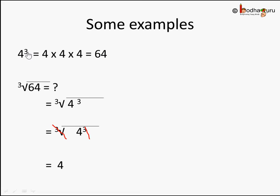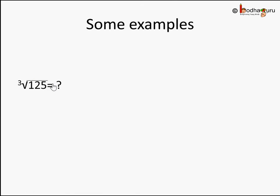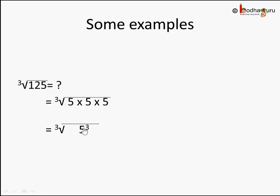Cube root and cube are inverse operations. Let's take another example: cube root of 125. We know 125 = 5 × 5 × 5 = 5 cubed. So we cancel the cube and the cube root, leaving 5. Therefore, cube root of 125 is 5, or 5 cubed is 125.